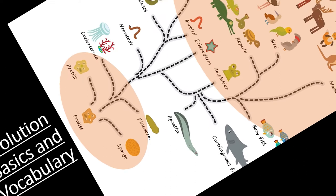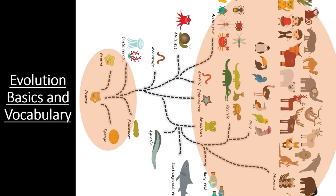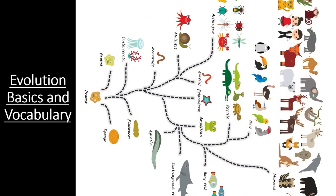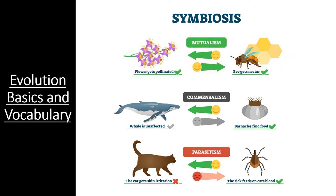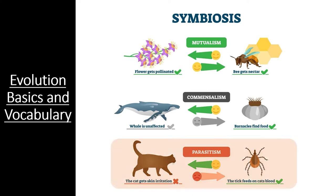To fully understand the endosymbiotic theory, you also have to understand the concept of symbiosis. Symbiosis simply means that two species have a relationship, and there are three different kinds. In a mutualistic relationship, both species benefit. In a commensal relationship, one organism benefits while the other is unaffected. In a parasitic relationship, the parasite benefits while the other organism is harmed.